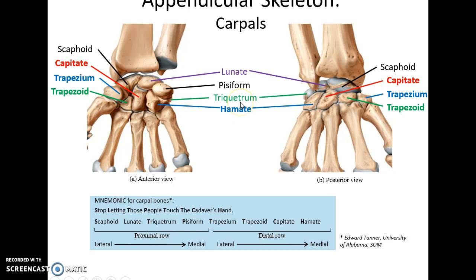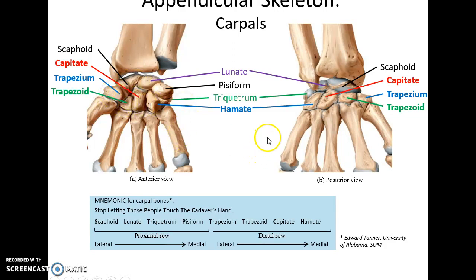Go down to the carpals — these are the wrist bones. There are eight of them. They are known as the scaphoid, lunate, triquetrum, and pisiform; trapezium, trapezoid, capitate, and hamate. Learn them, live them, love them.